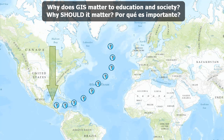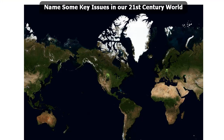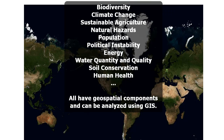I'd like to talk about why does GIS matter to education and society? Why should it matter? We could all have a talk about key issues in our 21st century world — biodiversity, climate change, sustainable agriculture, natural hazards, population, political instability, energy, water quality and quantity, soil conservation, human health, and so on. All of these have geospatial components, and therefore they can be analyzed using GIS.